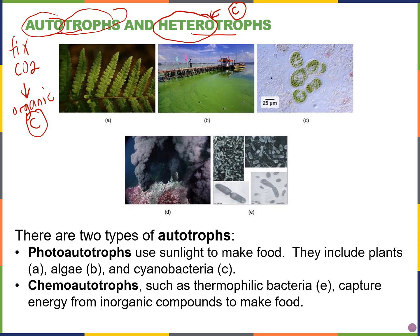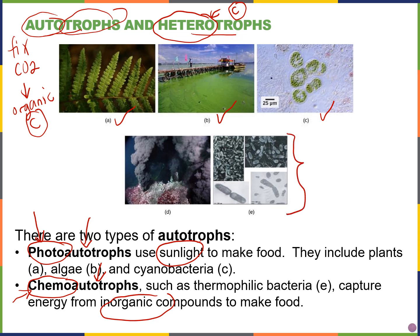Looking at autotrophs, there are two types: photo autotrophs and chemo autotrophs. Autotrophs can fix carbon — they turn carbon dioxide into some kind of organic carbon molecule. Photo autotrophs get their energy to do this from sunlight, and these include plants, algae, and cyanobacteria, a type of photosynthetic bacteria. Chemo autotrophs cannot go through photosynthesis; instead they get their energy source from some kind of inorganic compound. Examples include thermophilic bacteria found in deep sea vents.